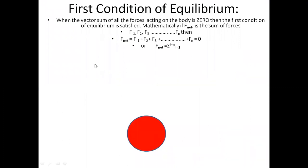When the first condition of equilibrium is satisfied, mathematically the net force F_net equals the sum of all forces, which must be equal to zero. That means F1 plus F2 plus F3 and so on up to Fn must equal zero. The sum of all forces acting on a body must be equal to zero.